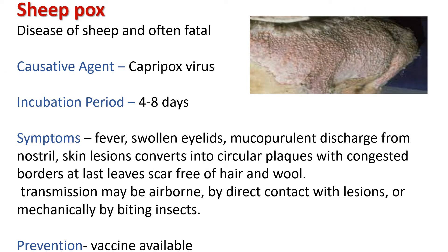Sheep pox is a disease of sheep and is often fatal. The causative agent is Capripox virus. Incubation period is 4 to 8 days. Symptoms are fever, swollen eyelids, mucopurulent discharge from nostrils, and skin lesions that convert into circular plaques with congested borders, which then convert into scars free from hair. Transmission is via air, by direct contact with lesions, or mechanically by biting insects. Prevention: a vaccine is available.